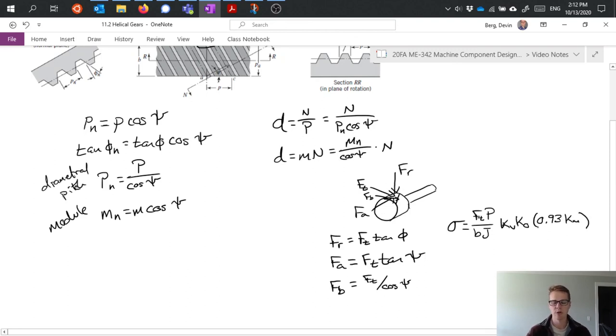However, you will notice one difference here, and that is there's this factor of 0.93 out in front of the mounting factor. That's really just taking into account that helical gears are a little bit less sensitive to mounting accuracy than a spur gear is.